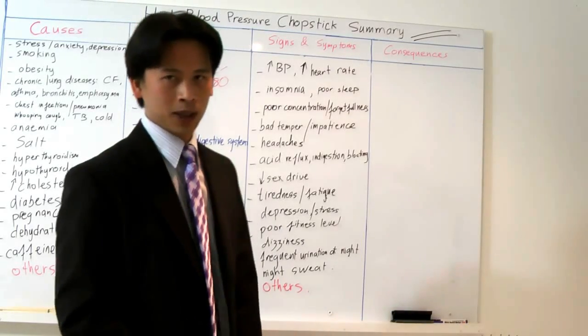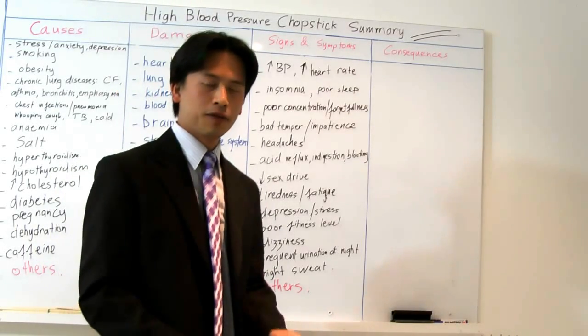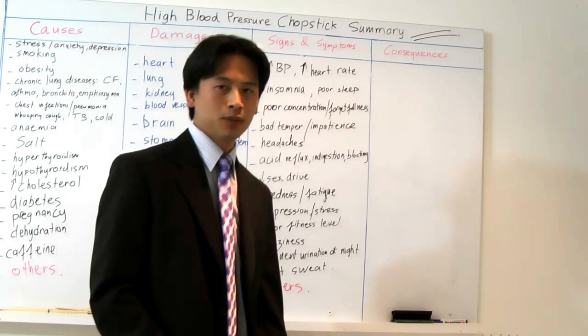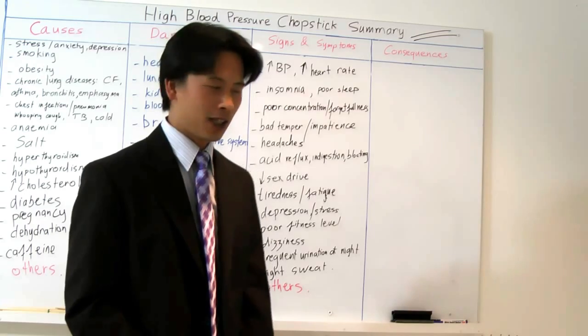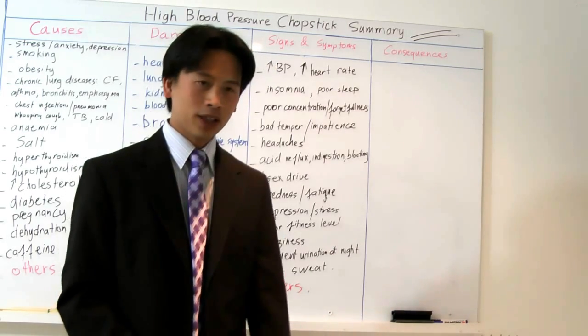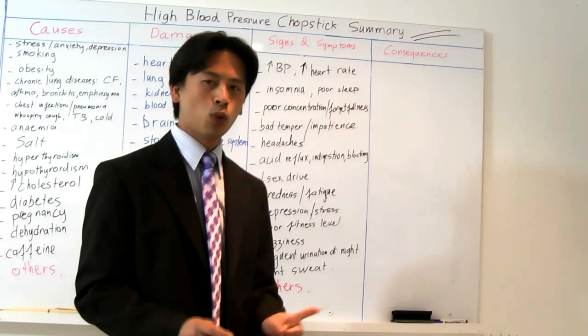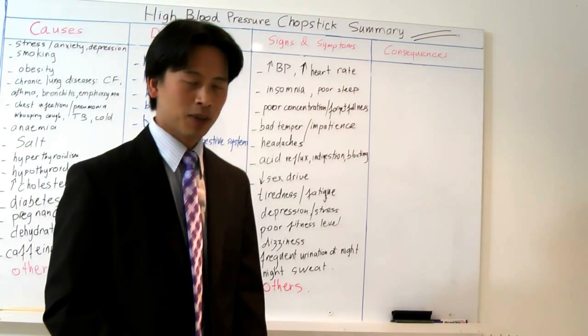Why do some people with high blood pressure often have frequent urination at night? This normally occurs in the early stages of high blood pressure, when you have high blood pressure during the day and maybe normal blood pressure at night when you're sleeping.